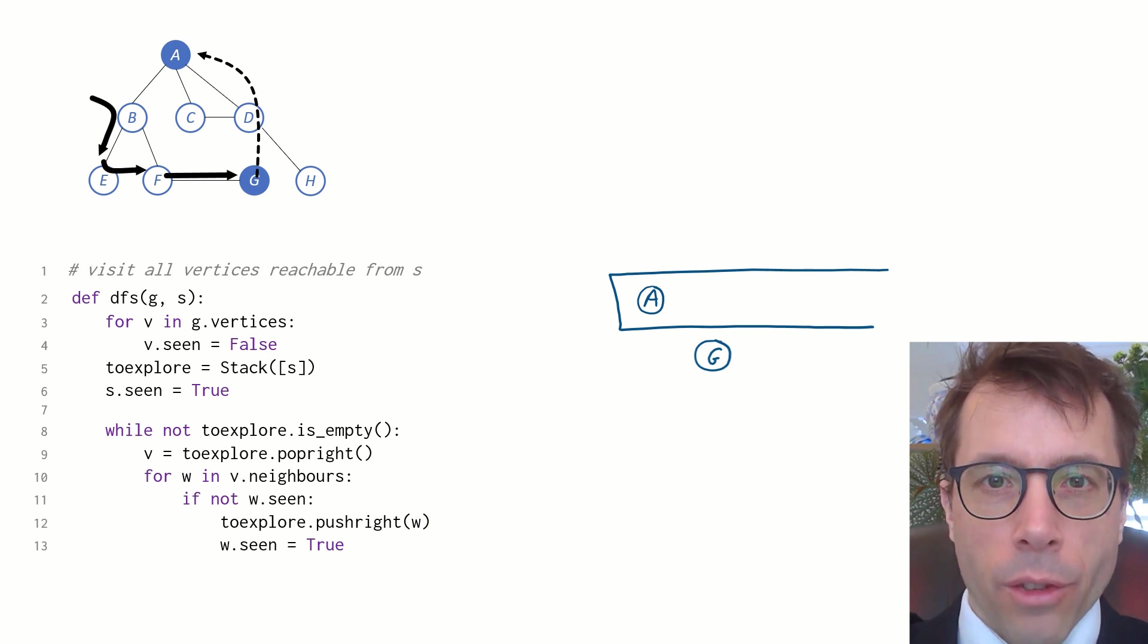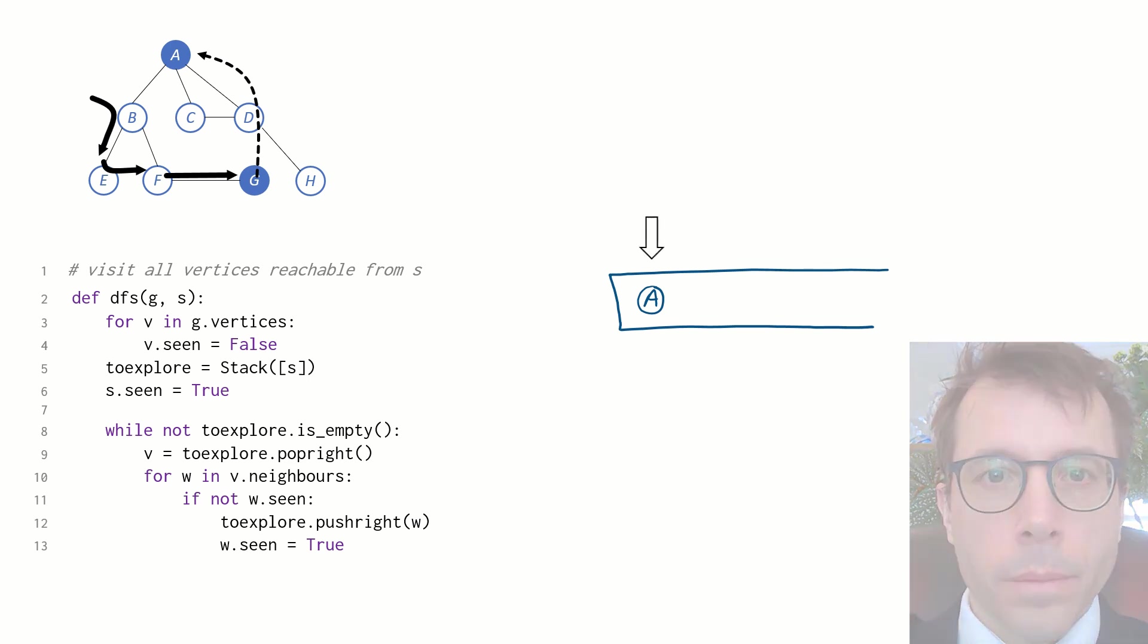Pick out the rightmost vertex as usual. This time it's G. G has nothing to add. And so on to the next vertex, A. And so on.